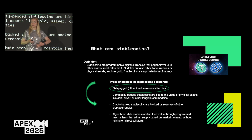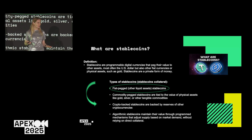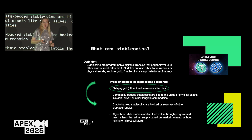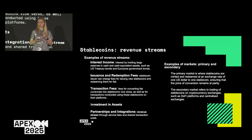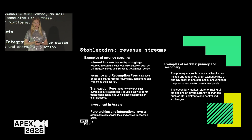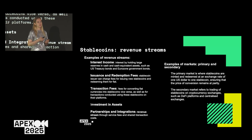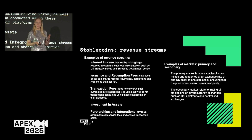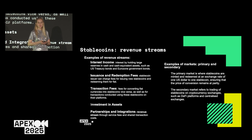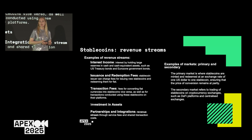Behind all these stablecoins we have organizations called stablecoin issuers. We can define two main types of revenues. The main one is interest income, which usually comes from holding large volumes of cash or cash-equivalent assets in bank accounts. Then we also have transaction fees and other types of fees.